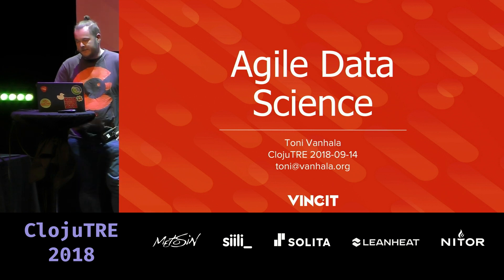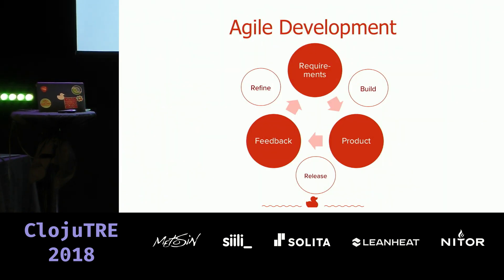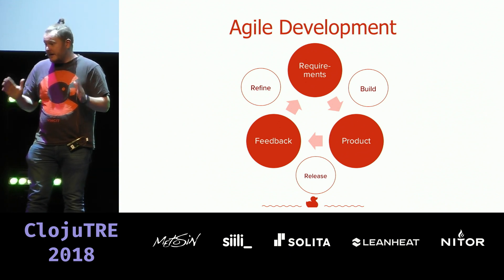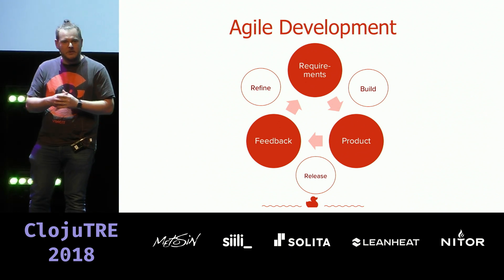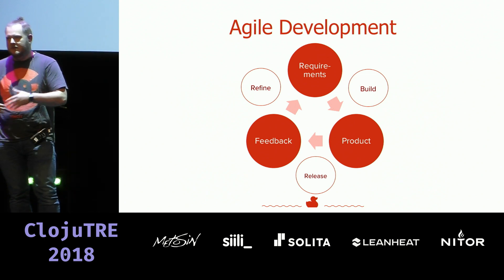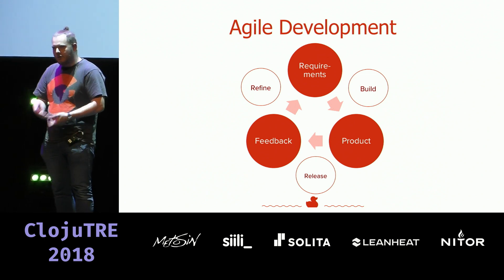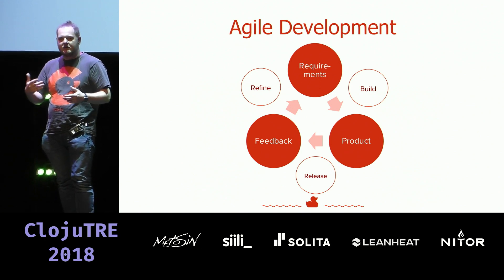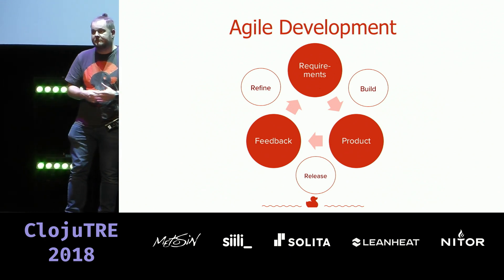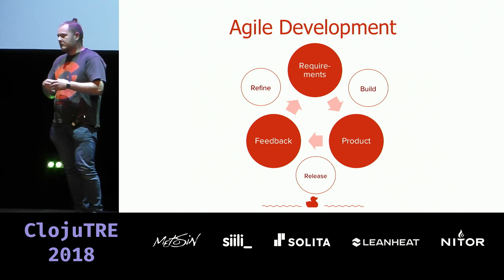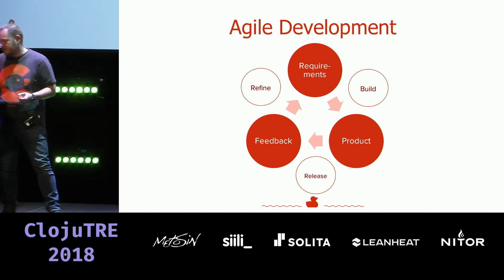Which is the agile way. I think most of you do some kind of agile, or at least what your management thinks is agile. The idea is that you have the requirements, you build the product, you show it to someone or collect some feedback, and then you refine the requirements. You go through this cycle and try to keep the cycle time short.